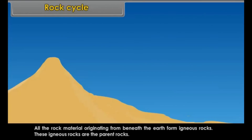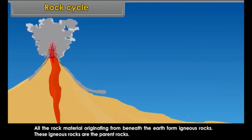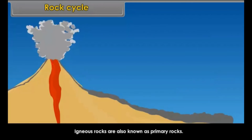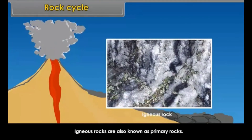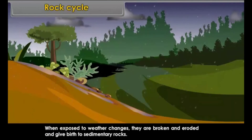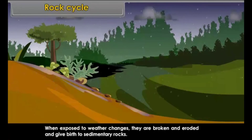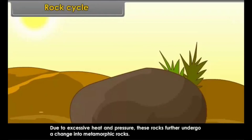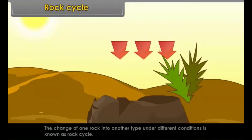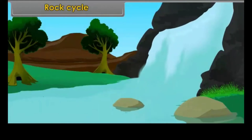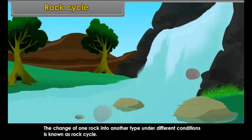Rock Cycle. All rock material originating from beneath the Earth forms igneous rocks — these are the parent or primary rocks. When exposed to weather changes, they are broken and eroded and give birth to sedimentary rocks. Due to excessive heat and pressure, these rocks further undergo change into metamorphic rocks. The change of one rock into another type under different conditions is known as the rock cycle.